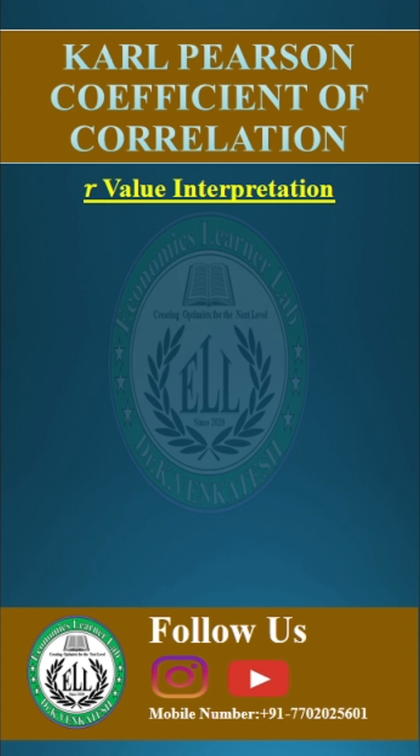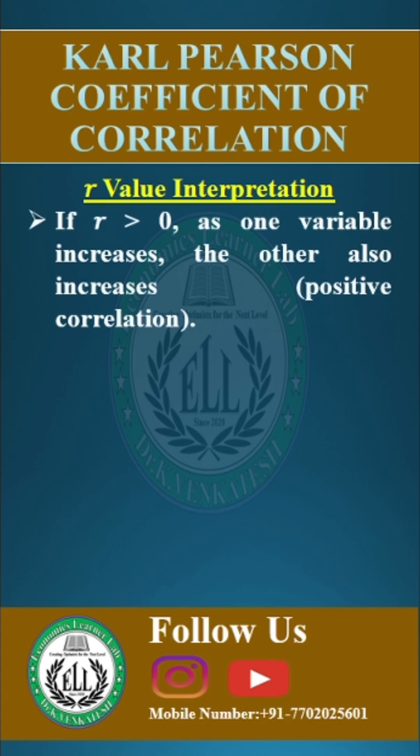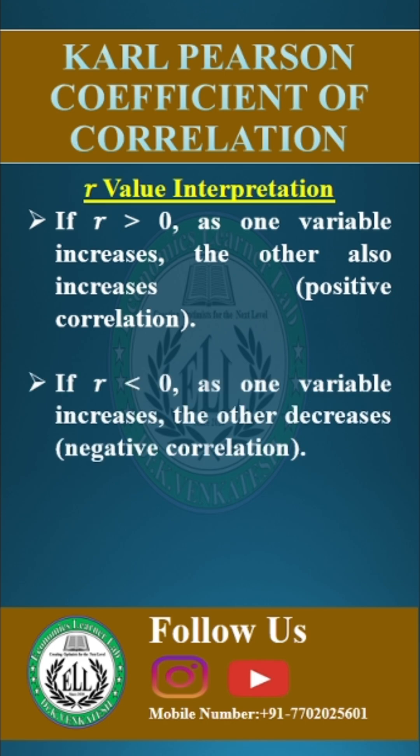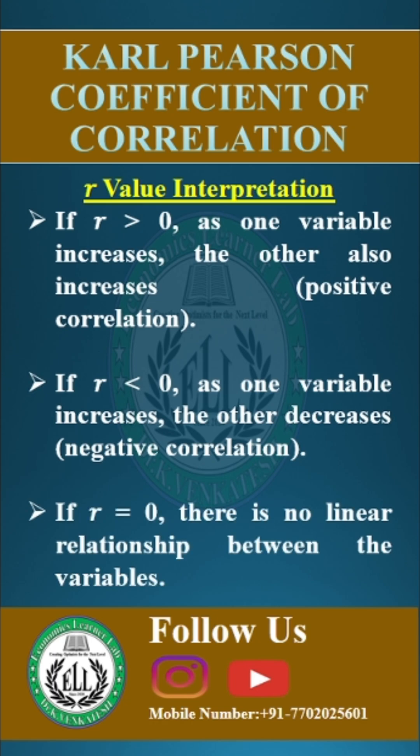General interpretation of R value: If R is greater than 0, a positive correlation exists, meaning both variables move in the same direction. If R is less than 0, a negative correlation exists, meaning as one variable increases, the other decreases. If R equals 0, there is no linear relationship between the variables.